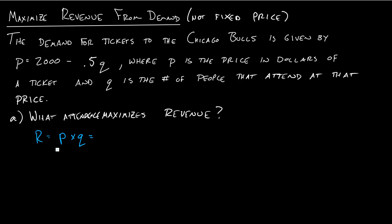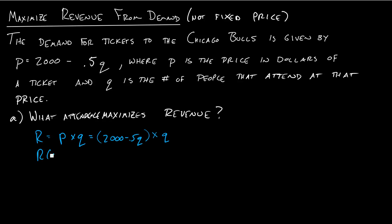How does that help us get anywhere? It just forms a foundation. What we want to do is turn this into an equation with just one variable on the right side. Notice what they've given us in the demand equation: price is equal to this quantity expression. So rather than having price times quantity, I'm going to substitute that expression in, because the expression and price are the same thing. Now I know that revenue in terms of quantity is equal to 2000q minus 0.5q squared.